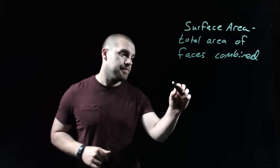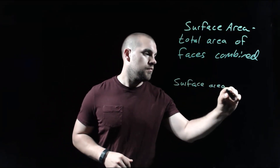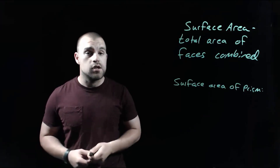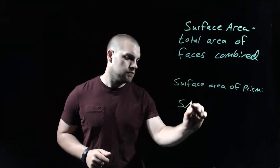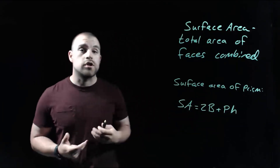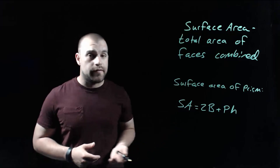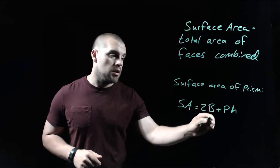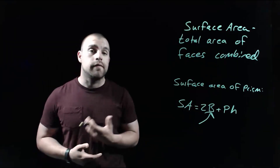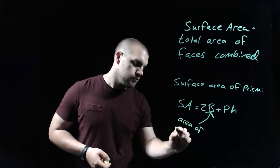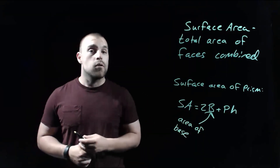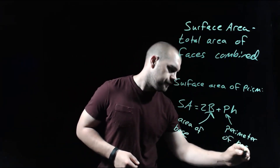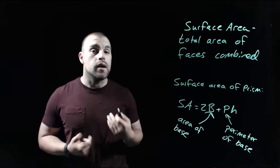As we're looking at the surface area of a prism, one thing we could do is find the area of each face individually, or we've got a formula which can help us figure out what the surface area is. SA on the left-hand side just means surface area. This capital B in our formula means we have to find the area of the base of our prism. The P in the formula stands for the perimeter of the base, and the H stands for the height of the prism.